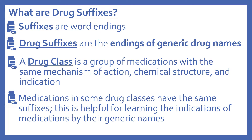Before we get to the actual drug suffixes, we'll look at what drug suffixes are. Suffixes are word endings, so drug suffixes are the endings of the generic drug names. First we need to look at what a drug class is. A drug class is a group of medications with the same mechanism of action, chemical structure, and indication. There are medications in some drug classes that have the same suffixes, which is helpful for learning the indications of medications by their generic names.